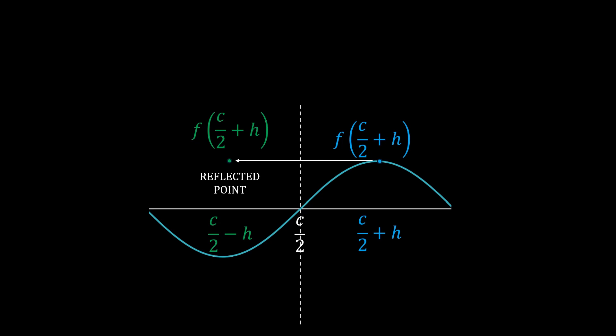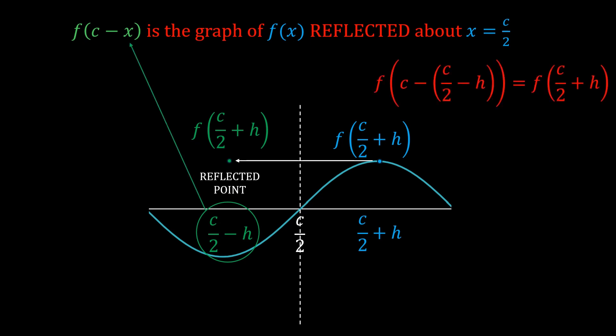Is this point on the graph of f(c-x)? Well, how do we check that? We just plug in the x-value of this reflected point into f(c-x). And then the corresponding y-value is f(c-(c/2-h)) = f(c/2+h), which perfectly matches with the reflected point. And that means this point is indeed on f(c-x).